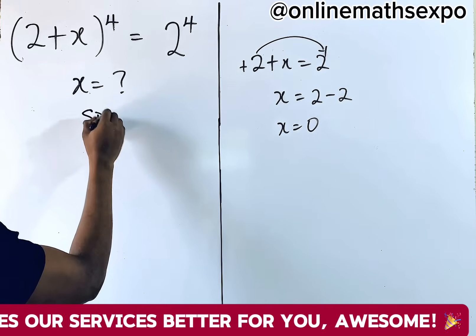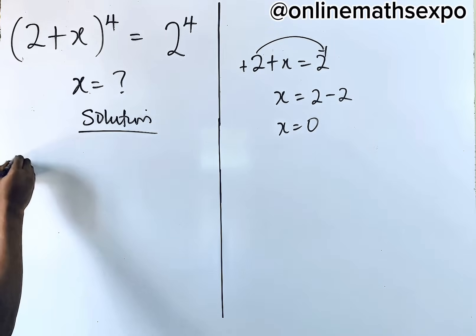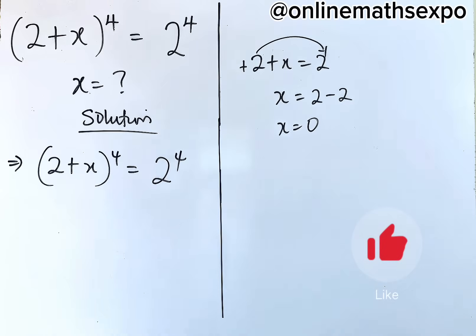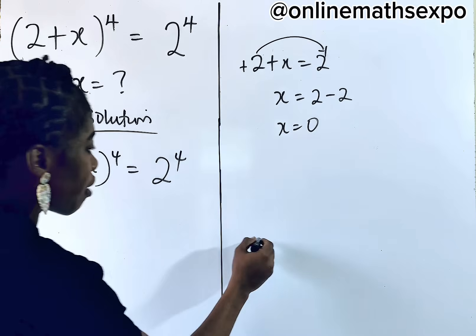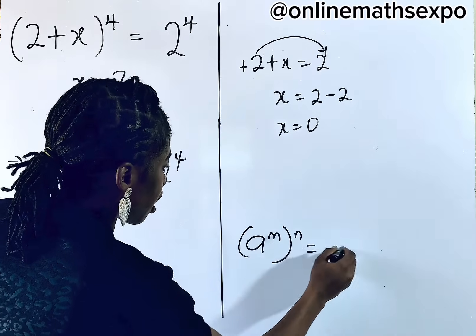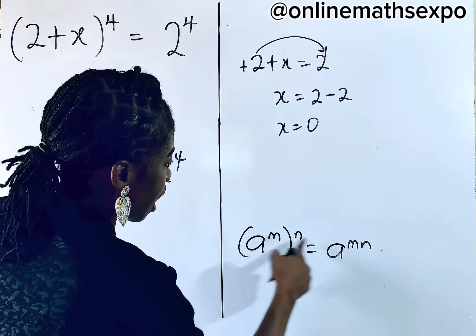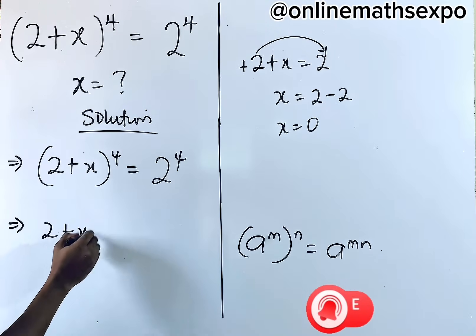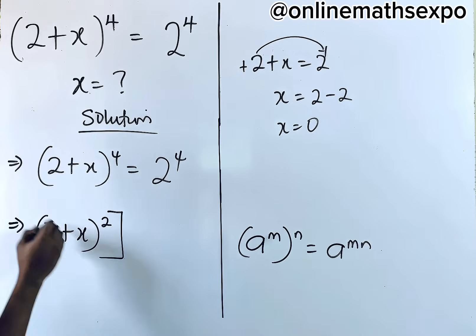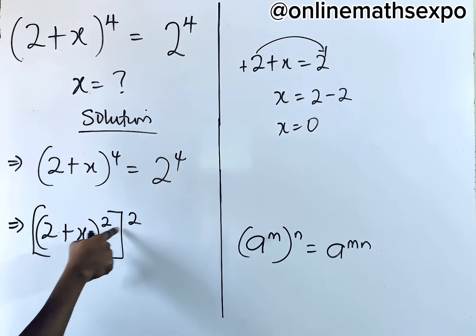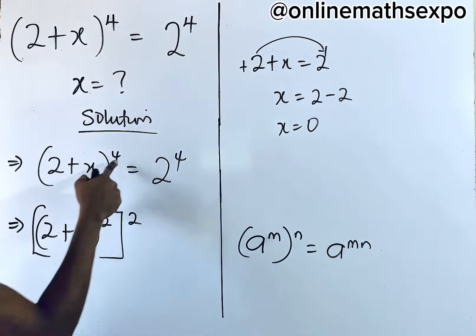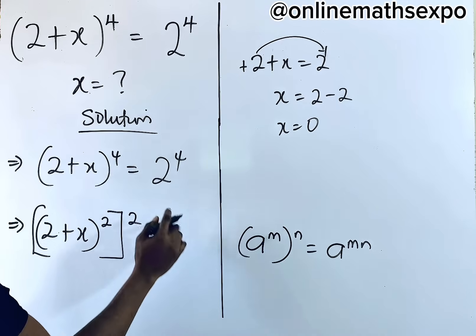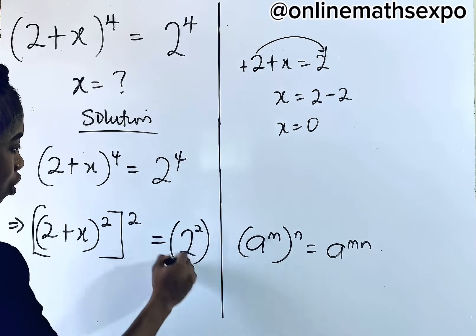Let's begin with the solution. We have (2 + x) to the 4th power is equal to 2 to the 4th power. Remember that for every a^m raised to the power of n, it is a^(mn) — the powers multiply. So we can rewrite it as (2 + x)² raised to the power of 2, which equals 2² raised to the power of 2. Multiplying the powers gives back 4, so we haven't changed anything.